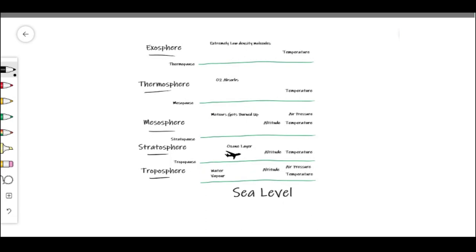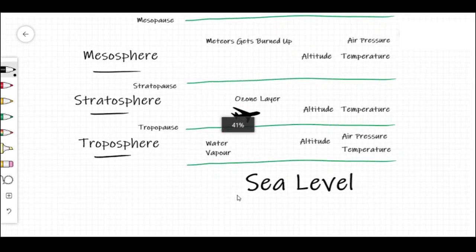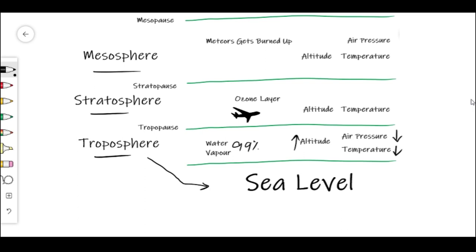The first layer of the atmosphere is the troposphere. As you can see, the troposphere is very close to sea level and hence human life exists here. 99% of the water vapor can be found here. As the altitude increases, air pressure and temperature decrease. Because of the 99% of water vapor, most of the weather change occurs in this layer of the atmosphere. The troposphere can extend up to 10 to 16 km in height and it stops in the position that is known as the tropopause.